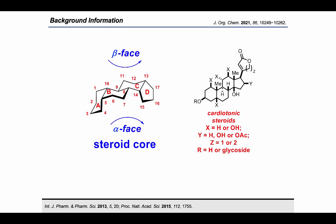Cardiotonic steroids represent a broad family of natural steroids found in various plant and animal sources. They feature a 6 CD and often cis AB ring junctions with beta-C14 hydroxylation and a 5- or 6-membered oxygenated heterocycle at the C17 position of the steroidal skeleton.